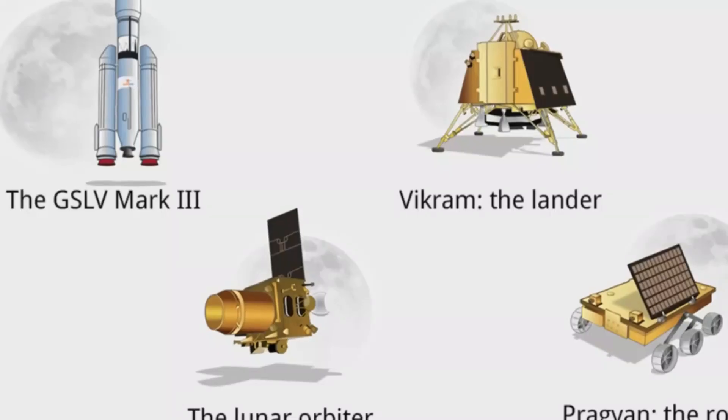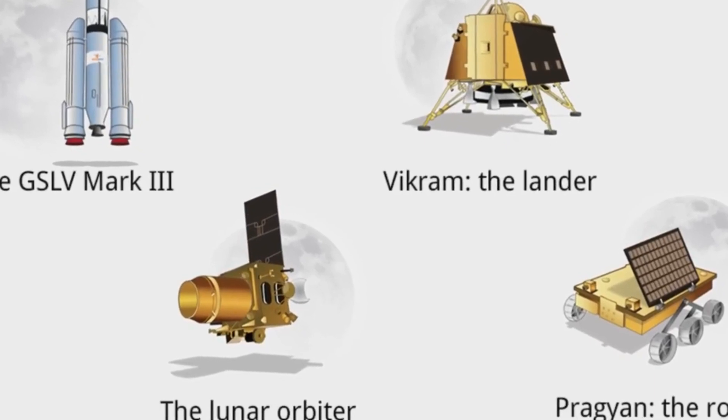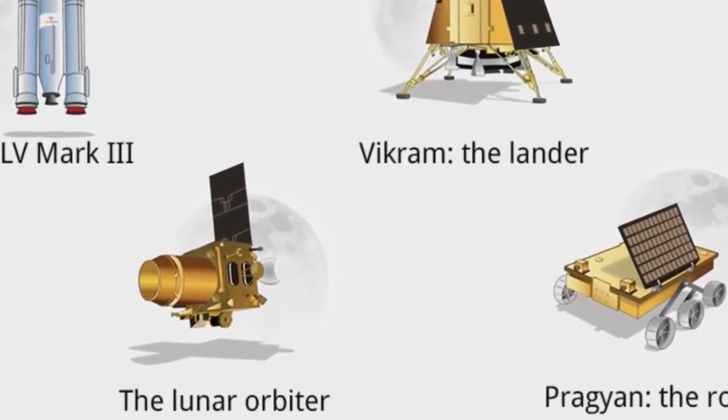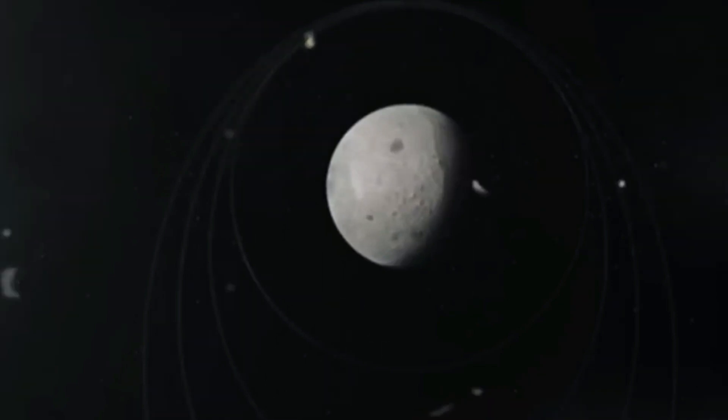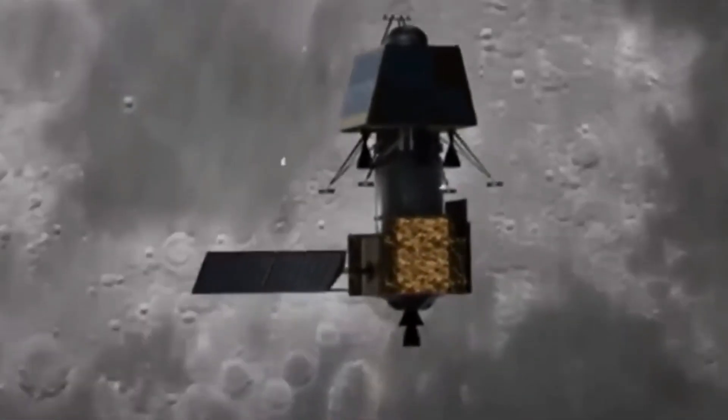India's second lunar mission was Chandrayaan-2, which was launched in 2019. It consisted of three components: an orbiter, a lander named Vikram, and a rover named Pragyan. The orbiter is still functioning and sending valuable data and images of the moon.